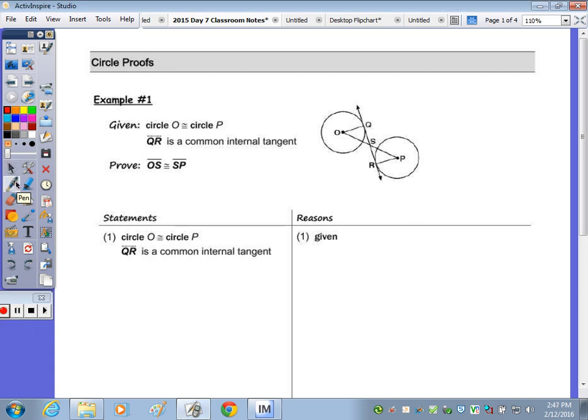So, given the first circle proof, it says circle O is congruent to circle P, and QR is a common internal tangent. The circle O congruent to circle P statement tells you the radii are congruent. If two circles are congruent, then the radii are congruent. So, step number two, the radii are OQ and PR.